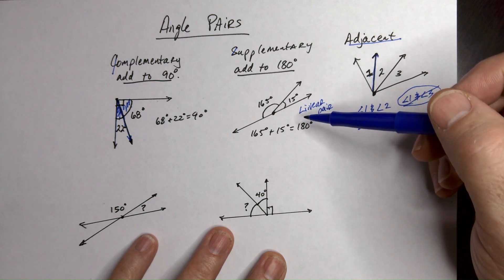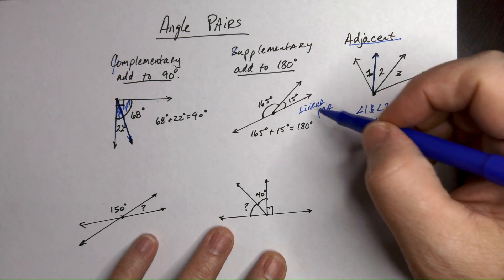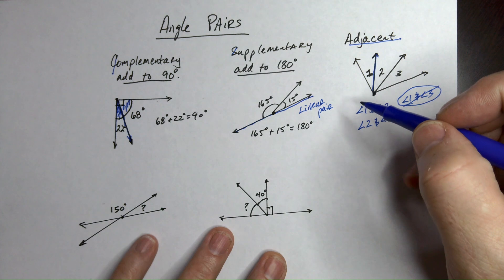However, they're going to be adjacent whereas two angles that are supplementary don't necessarily have to be side by side. So a linear pair, they're just like this where together they make a straight line.